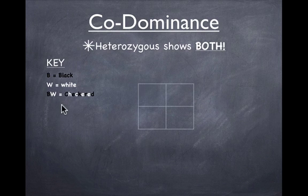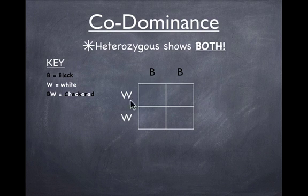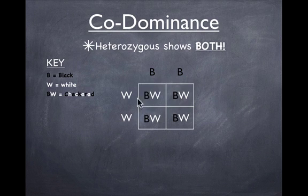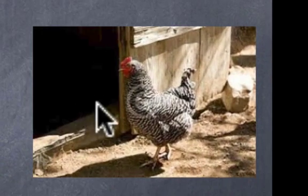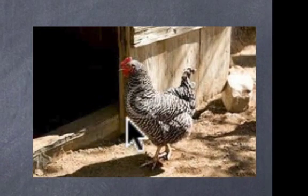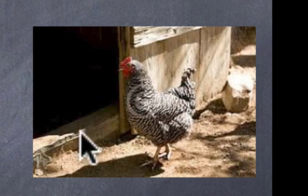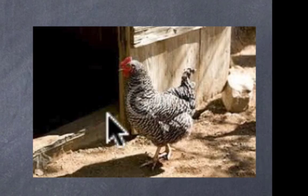Let's cross a black feathered chicken with a white feathered chicken. And what do we end up with? We get 100% checkered. Now if you've never seen a checkered chicken — bam, there's the checkered chicken. It's a really cool little animal. It's like if you go to KFC and you get original and extra crispy all in the same bucket. So the checkered chicken has both black and white feathers.